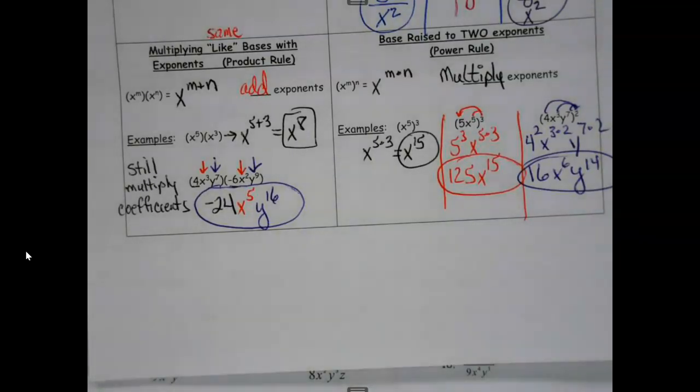So at the end here, when we take our 2 over to the 4, 4 squared is 4 times 4, so that's 16. And then we're going to do 3 times 2 for x, 7 times 2 for y, and we're good. Again, I can't put things together that aren't the same base, that aren't the same variable. And that's all there is to power to power.